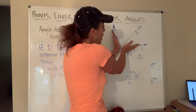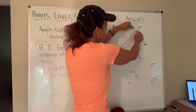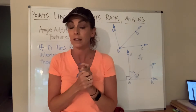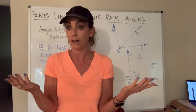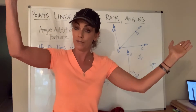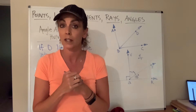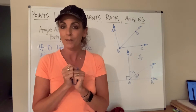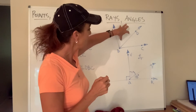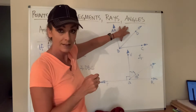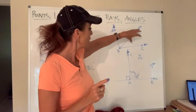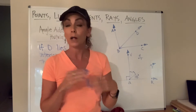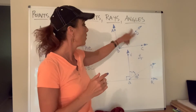The way this is drawn, a segment would not really go that way, but if I extended those rays — which we know rays are extendable because they go infinitely in that direction — we could definitely do that. D is on the interior of angle ABC. If that's true, then the measure of angle ABD, this small angle, plus the measure of angle DBC, this small angle, will equal the measure of the whole thing.